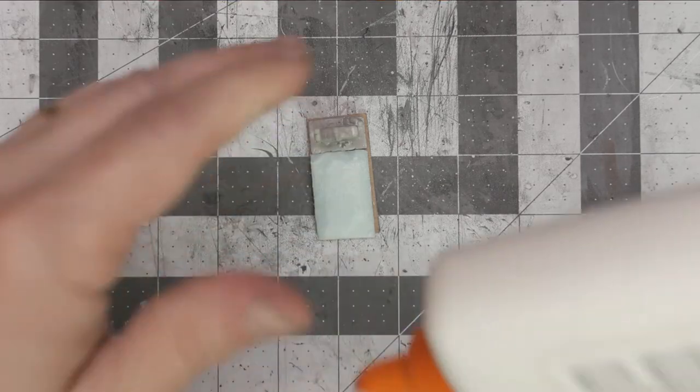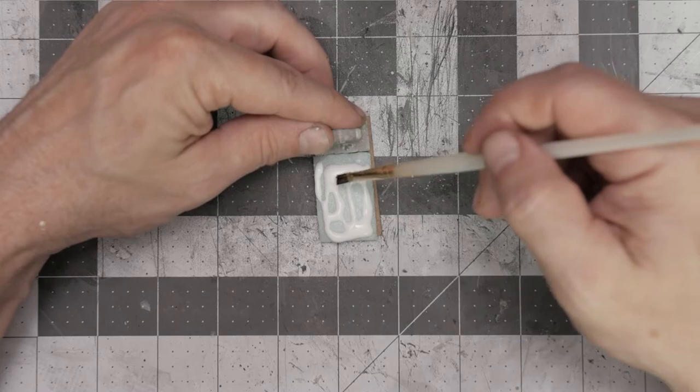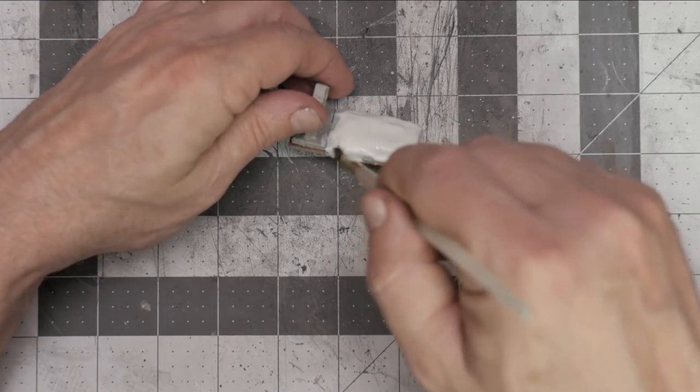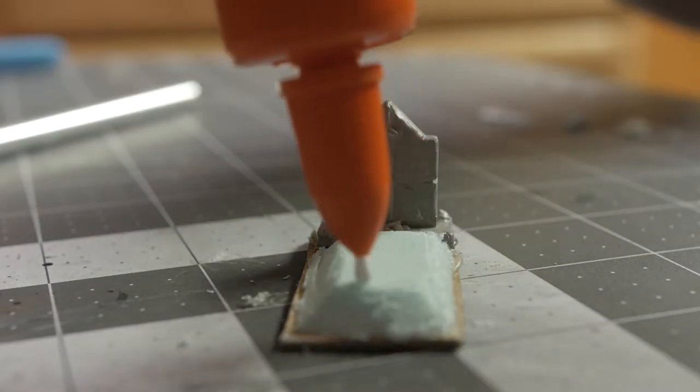In this next step, I'm going to apply a very generous amount of Elmer's glue to the foam, and I'll use a brush to spread it out over the entire surface to make sure I got full coverage.